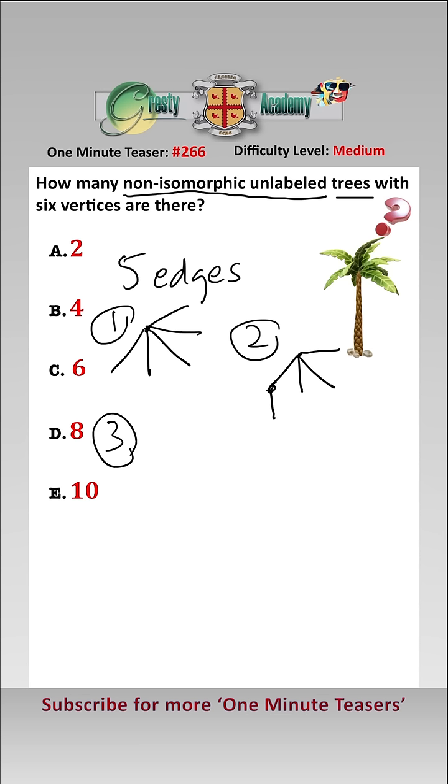The third way we can arrange is that two vertices have three edges. So there's the first one with three edges and there's the second one.